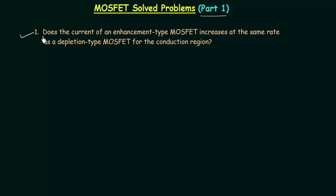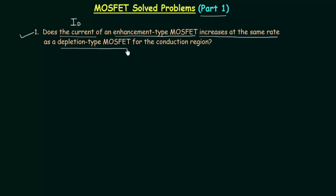Let's read the problem first. Does the drain current ID of an enhancement type MOSFET increase at the same rate as a depletion type MOSFET for the conduction region? So we are comparing the drain current in case of enhancement type MOSFET to the drain current in case of depletion type MOSFET for the conduction region, and we have to tell whether these two currents are increasing at the same rate or not.